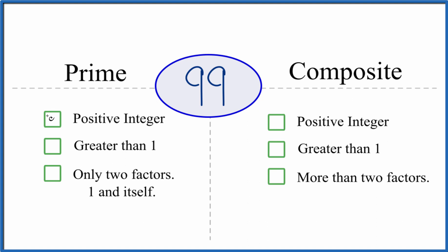So is it a positive integer? It's a positive integer. We have a whole number. It's greater than 1. And are there only two factors, one and itself, that go into 99?